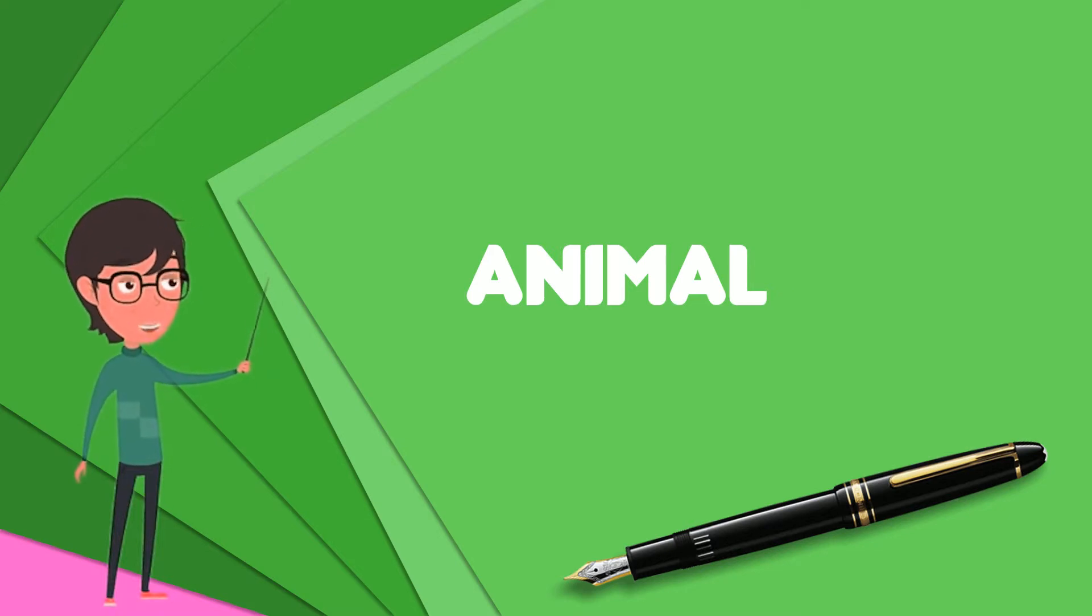The Bilateria also include the deuterostomes, containing the echinoderms and chordates. Life forms interpreted as early animals were present in the Ediacaran biota of the late Precambrian. Many modern animal phyla became clearly established in the fossil record as marine species during the Cambrian explosion.